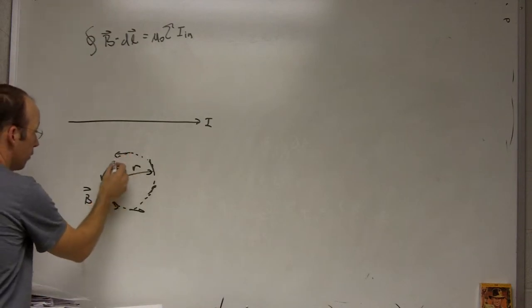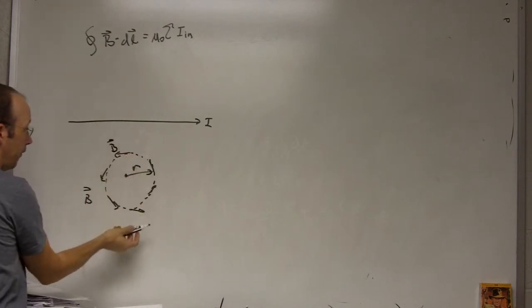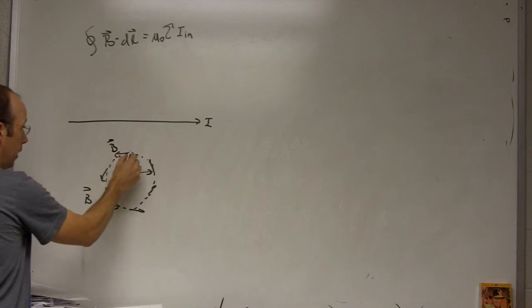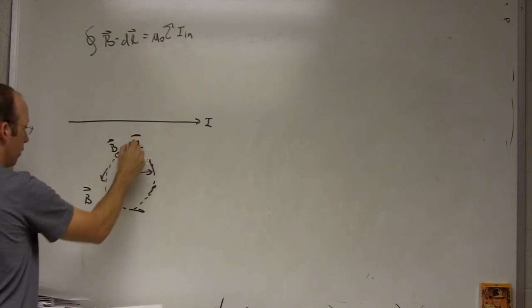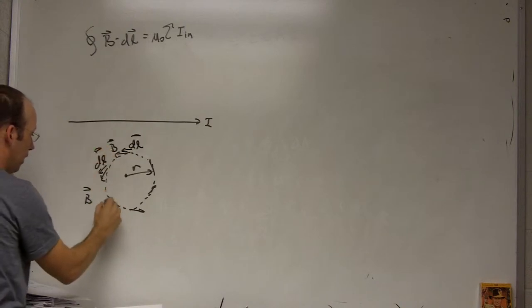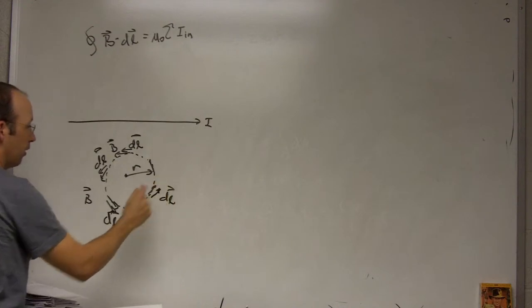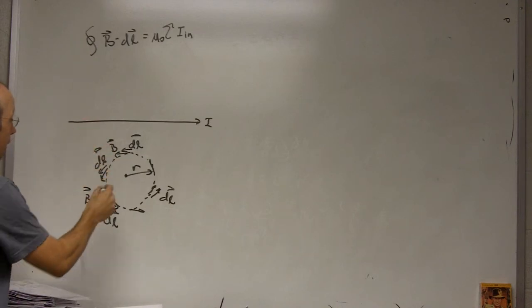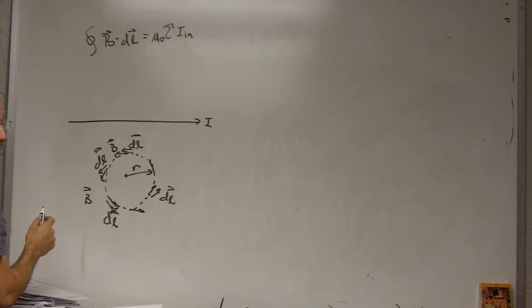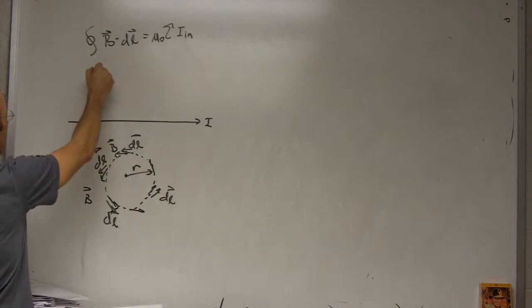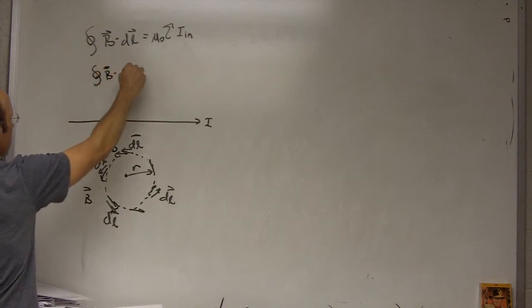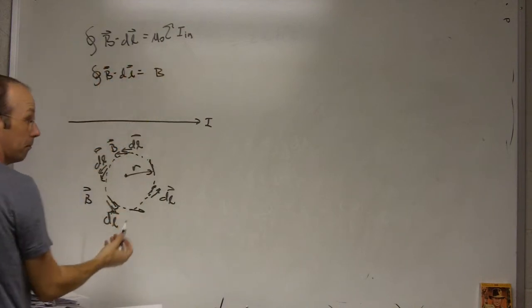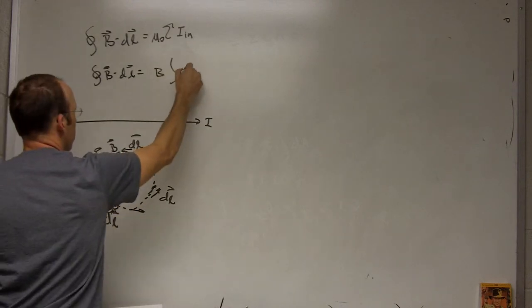So in this case, the trick is that's B and if I integrate around this way, then this is going to be DL and at any location, B is in the same direction as DL. So it's going to be easy, right? If I take B dot DL and they're always in the same direction and if I'm the same distance away from the wire and if I know B is constant at that distance, then this whole integral becomes just B because B is constant integral of DL.